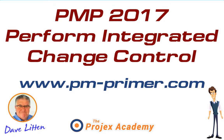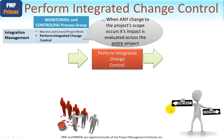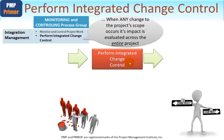Let's now look at the next process: Perform Integrated Change Control. The most important thing to remember here, and the reason why this is within the integration management knowledge area under monitoring and controlling, is because when any change to the project scope occurs, its impact is evaluated across the entire project. Perform Integrated Change Control is focused on any changes to the project scope, whereas the previous process, Monitor and Control Project Work, focuses on managing the way that the scope is actually executed.